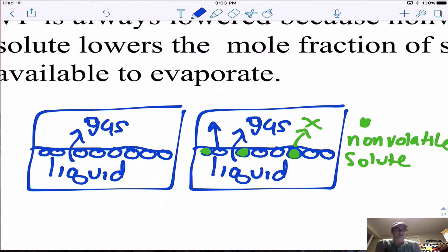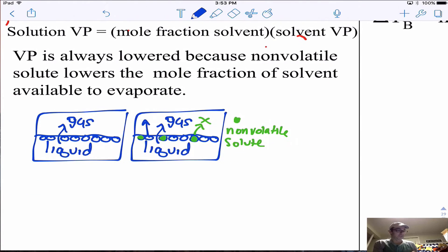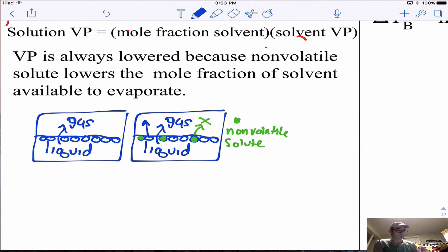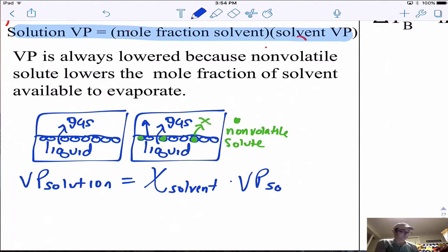The equation is the vapor pressure of the solution equals the mole fraction of the solvent, because the solvent is what's evaporating, times the vapor pressure of the pure solvent. In shorthand: VP_solution = X_solvent × VP_solvent.